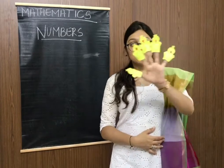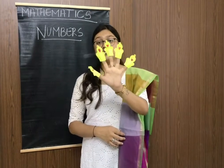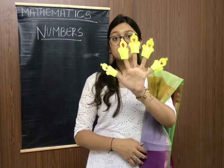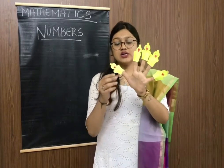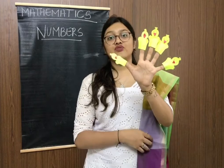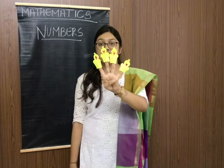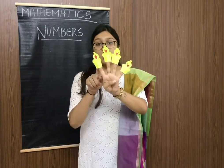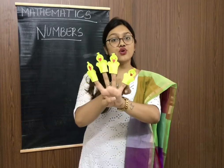So students, say hi to ducks. These are the 5 ducks swimming in the pond. One duck flies away. How many ducks are left? 4. 1, 2, 3, 4.